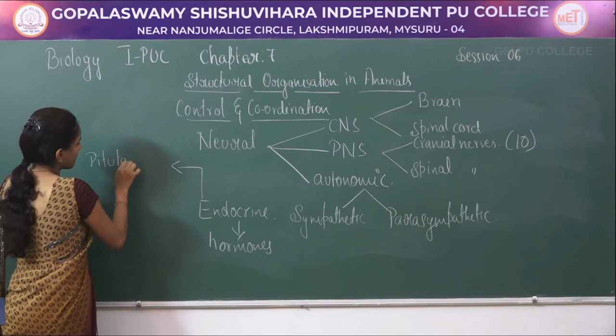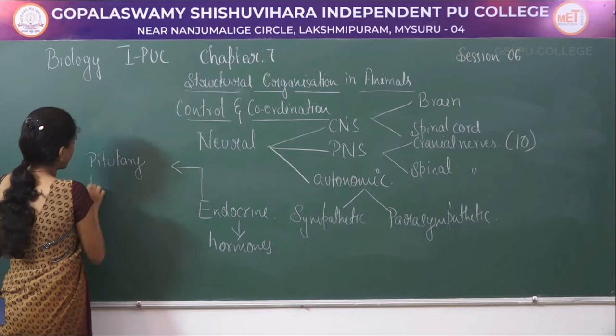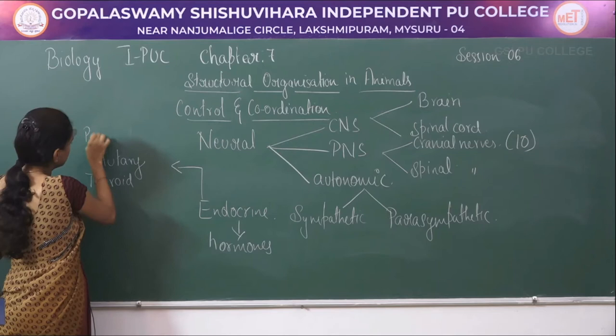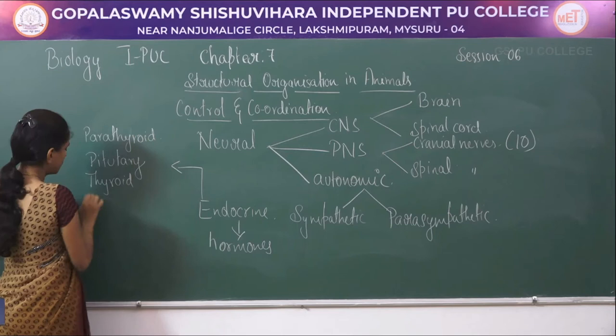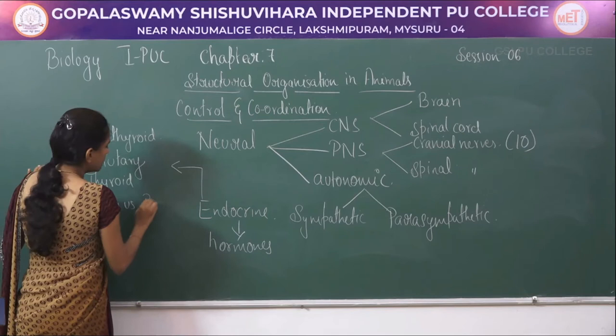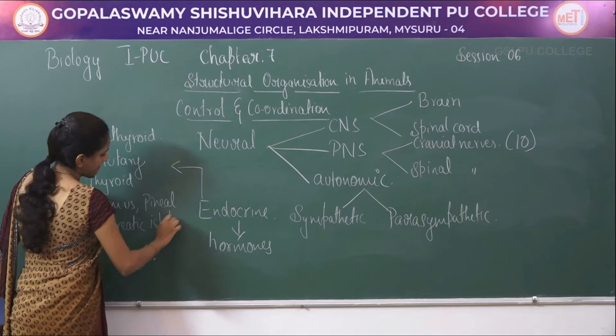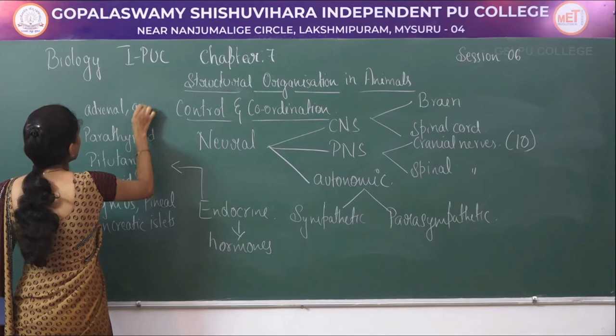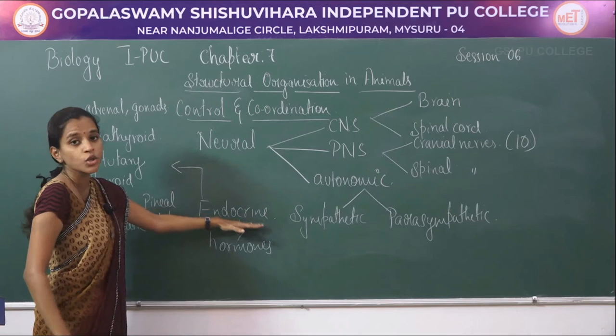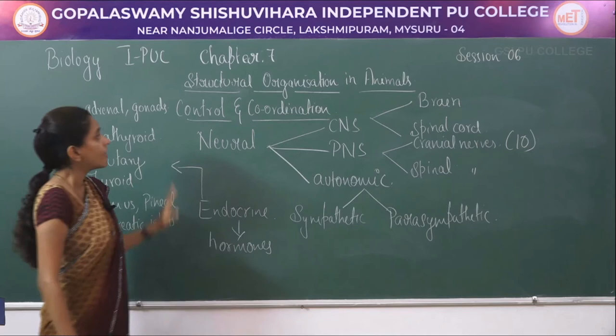There are different hormones released by endocrine glands which help in chemical coordination. Examples of endocrine glands include the pituitary, thyroid, parathyroid, thymus, pineal, pancreatic islets, adrenal, and gonads. These are the different types of endocrine glands which release hormones for chemical coordination.